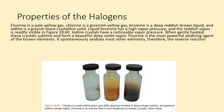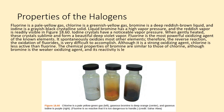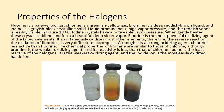Fluorine is the most powerful oxidizing agent of the known elements. It spontaneously oxidizes most other elements; therefore, the reverse reaction — the oxidation of fluorides — is very difficult to accomplish. Although it is a strong oxidizing agent, chlorine is less active than fluorine. The chemical properties of bromine are similar to those of chlorine, although bromine is the weaker oxidizing agent and its reactivity is less than that of chlorine. Iodine is the least reactive of the halogens — it is the weakest oxidizing agent, and the iodide ion is the most easily oxidized halide ion.